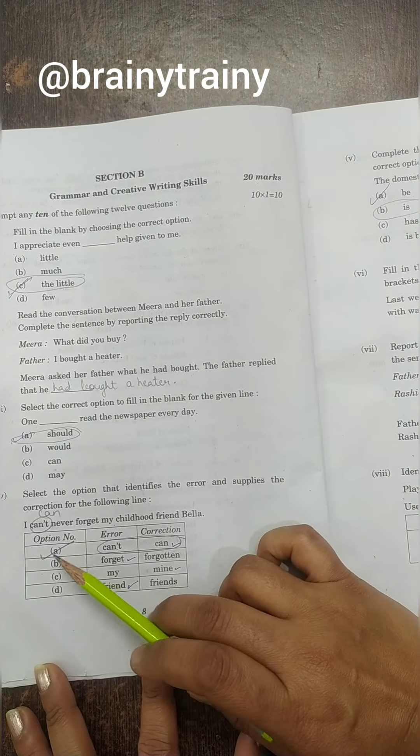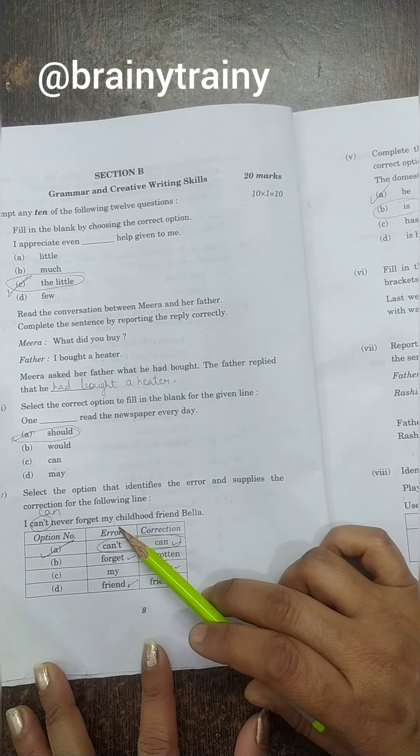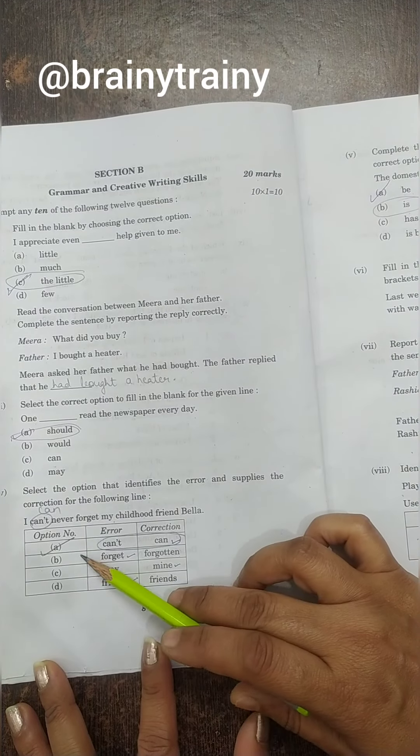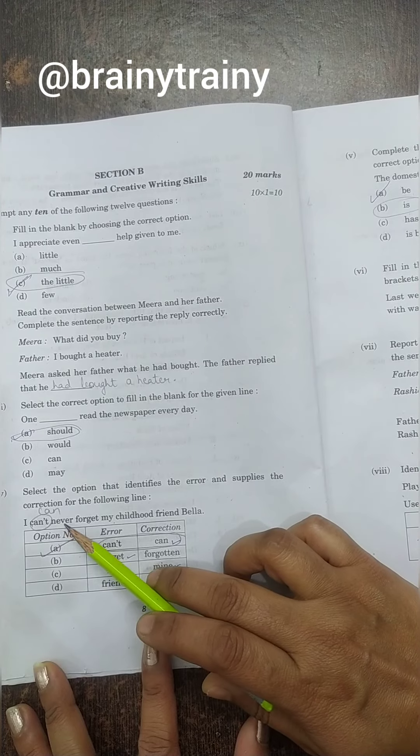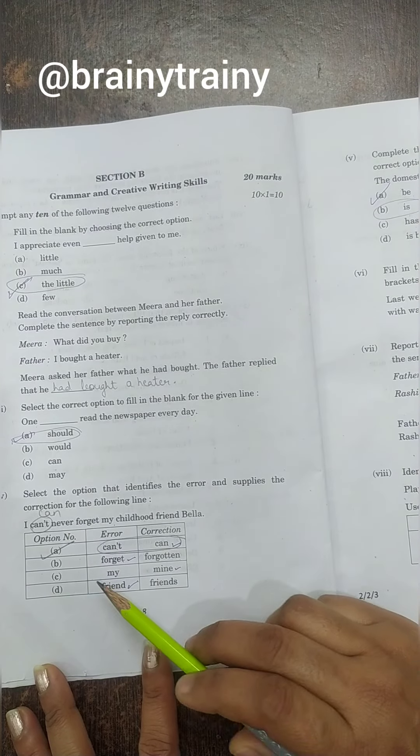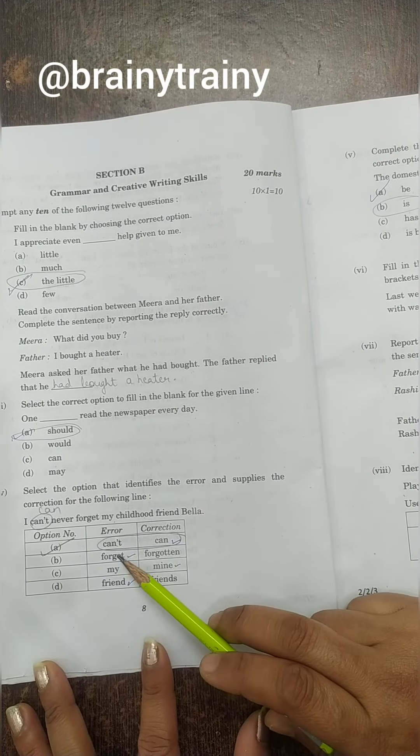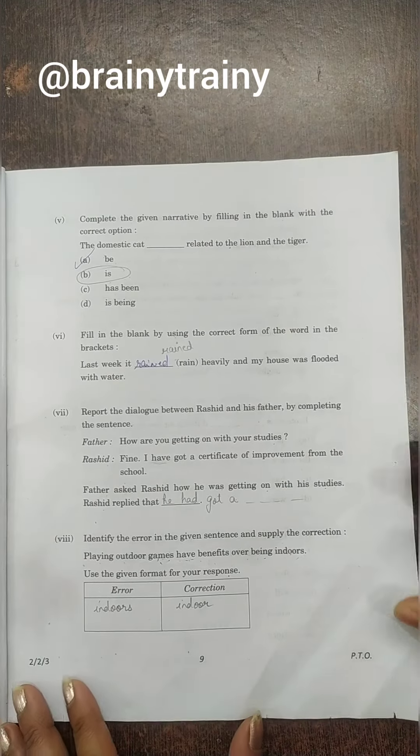Question number 4: Error correction. You have a sentence given: I can't never forget my childhood friend Bella. So there are 4 options given, you have to tell one right answer. So can't and never - this answer will be 'can'. So what will this answer be: I can never forget. So option A is the right answer.